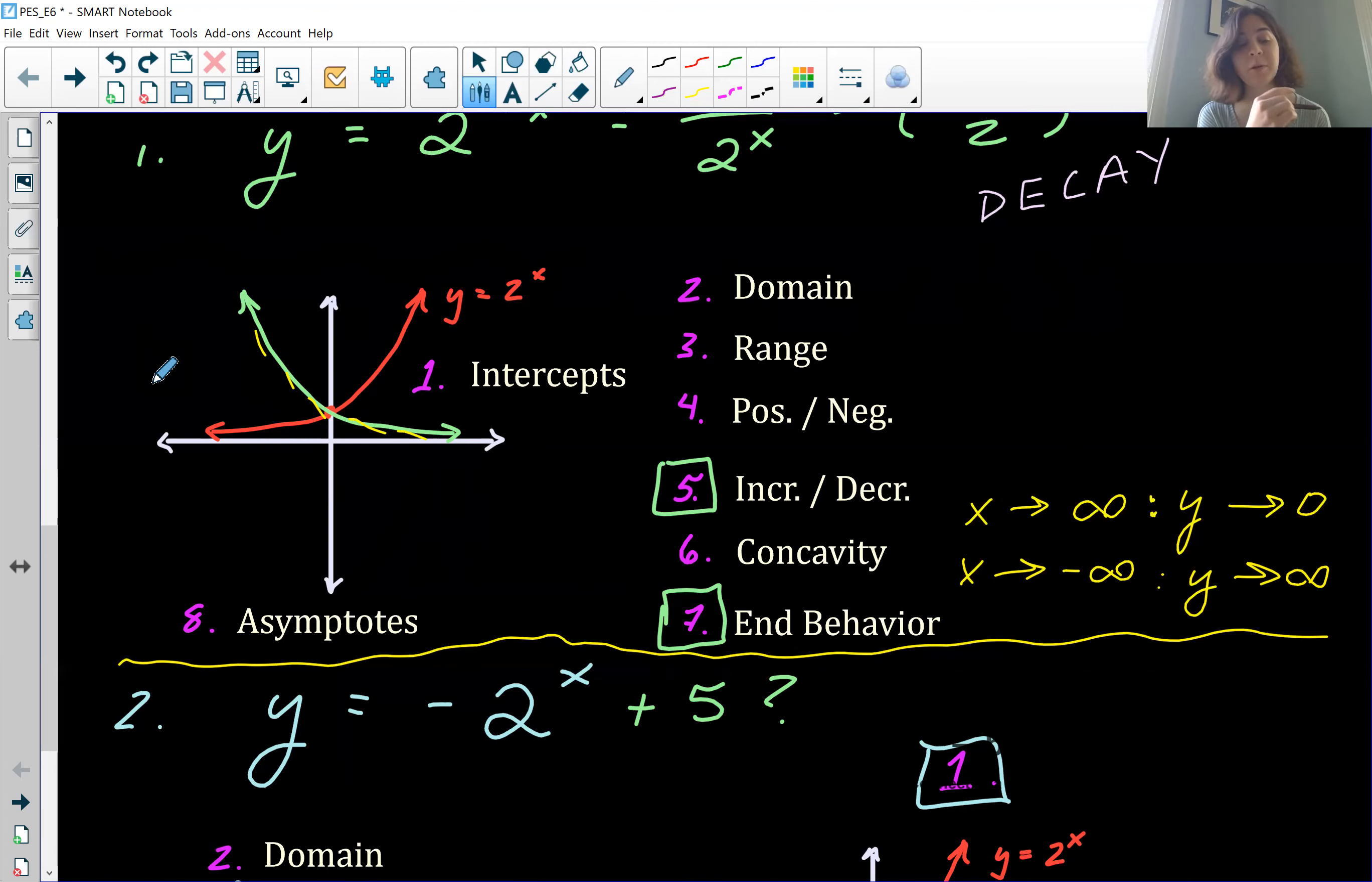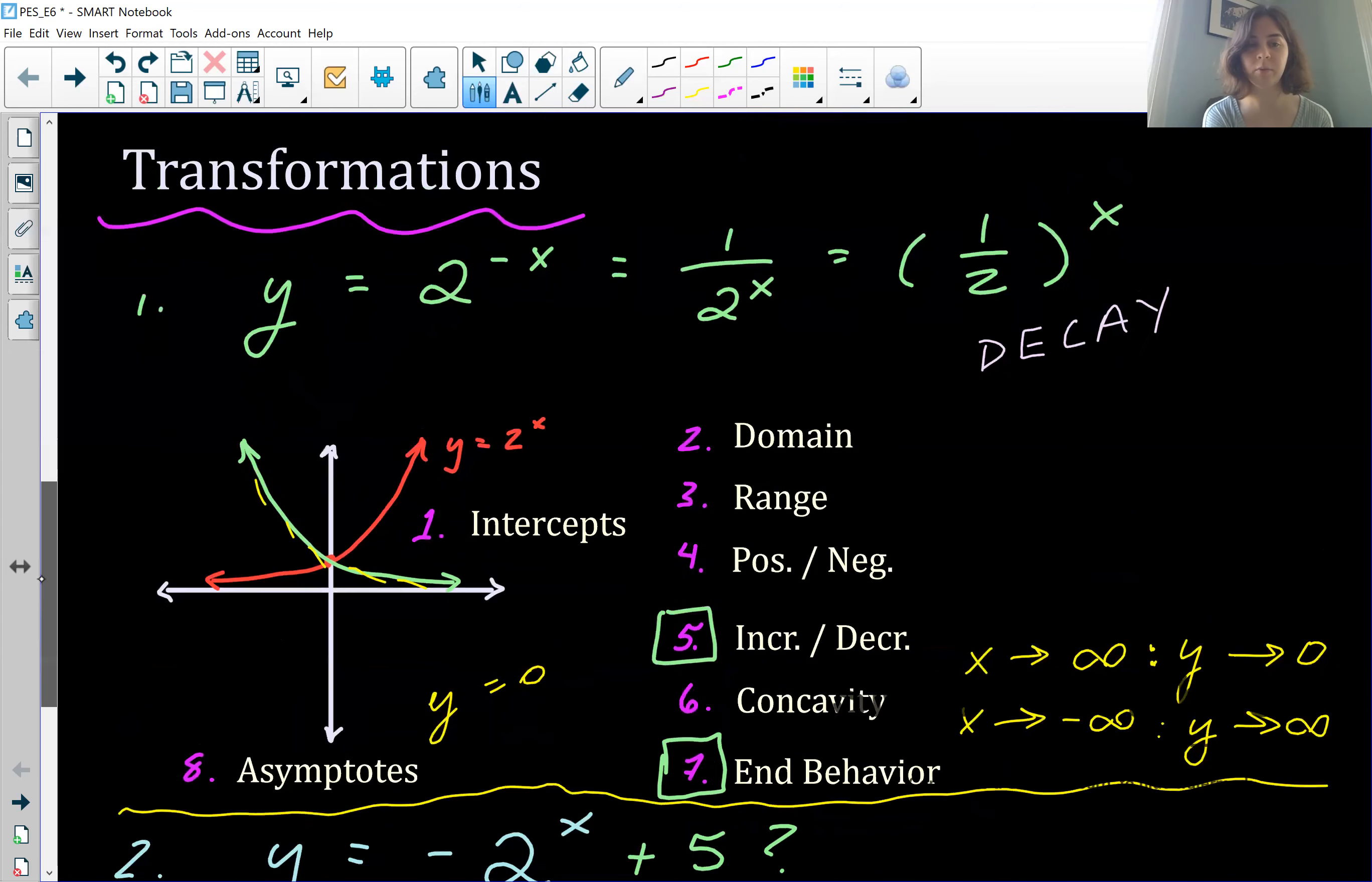And you can just see that kind of on the graph itself. And asymptotes, that's going to stay the same. Y equals zero. And so that is the transformation for a negative exponent. Again, it just makes it into a fraction, which is exponential decay.